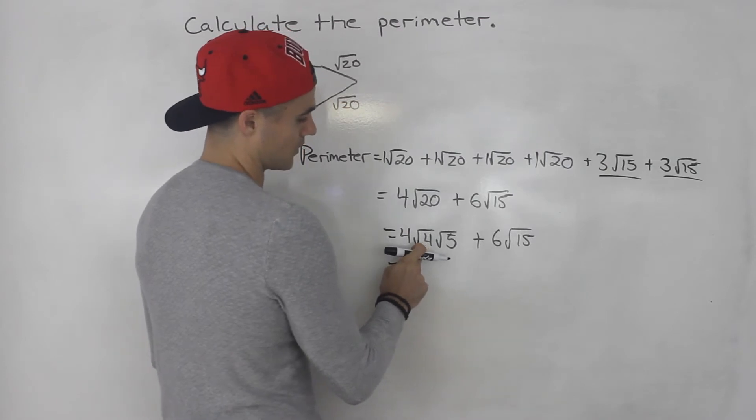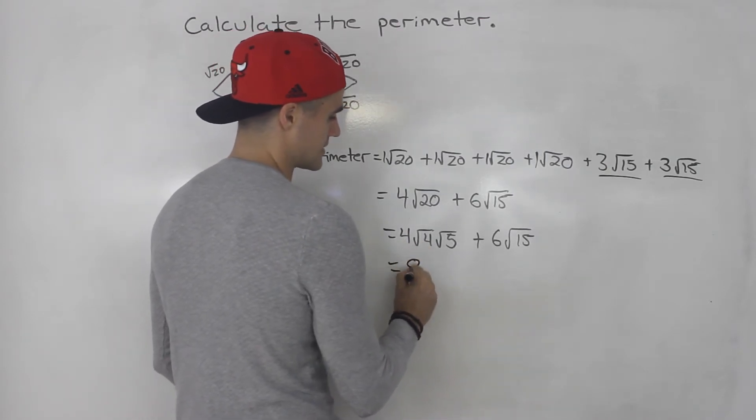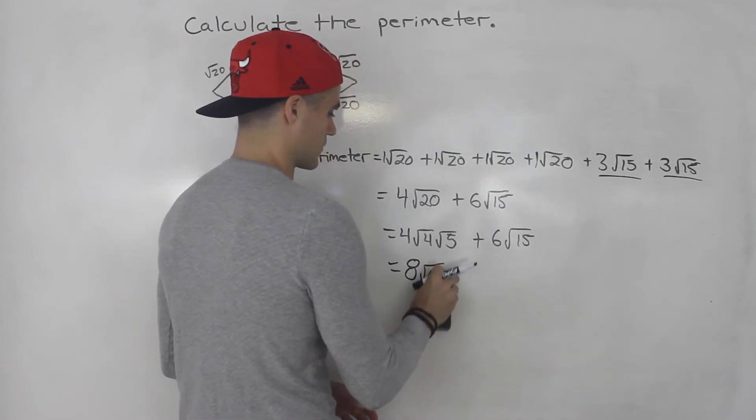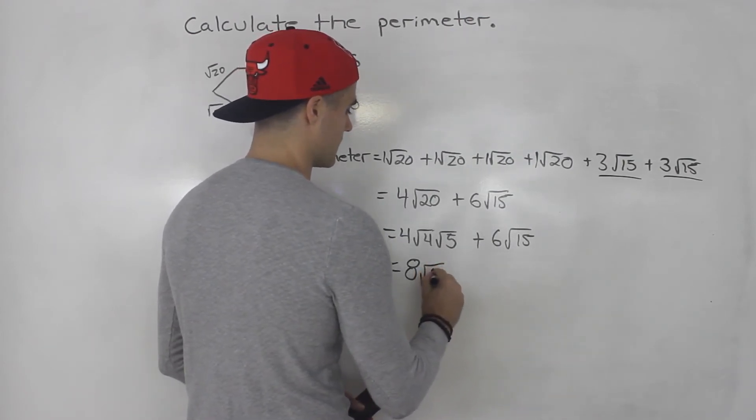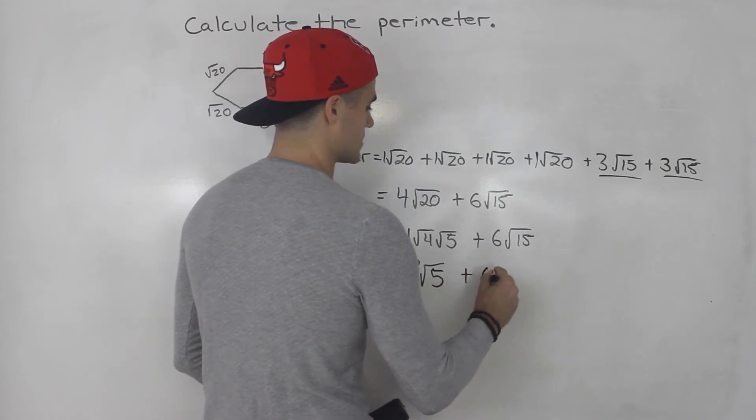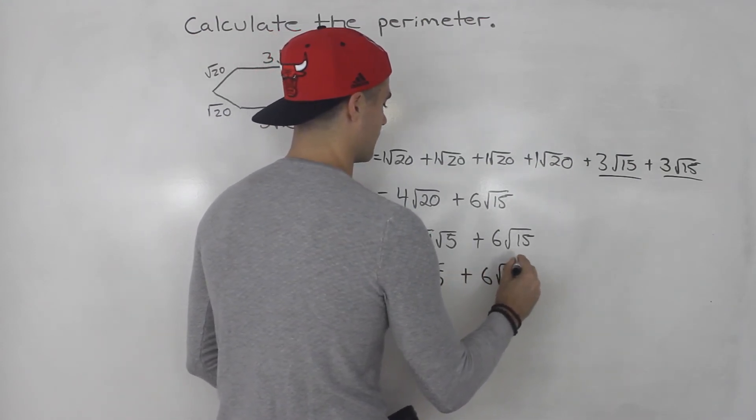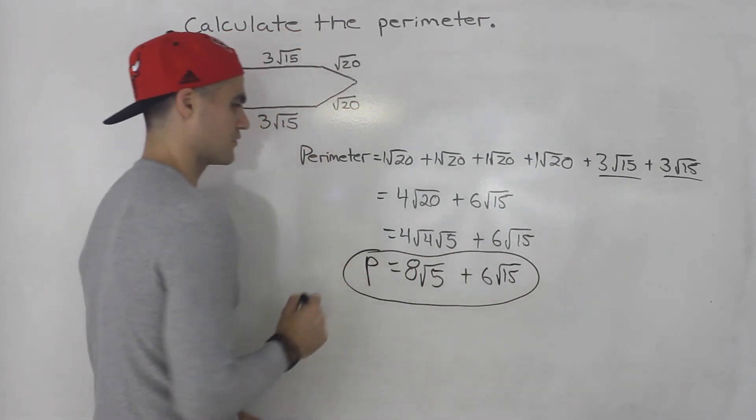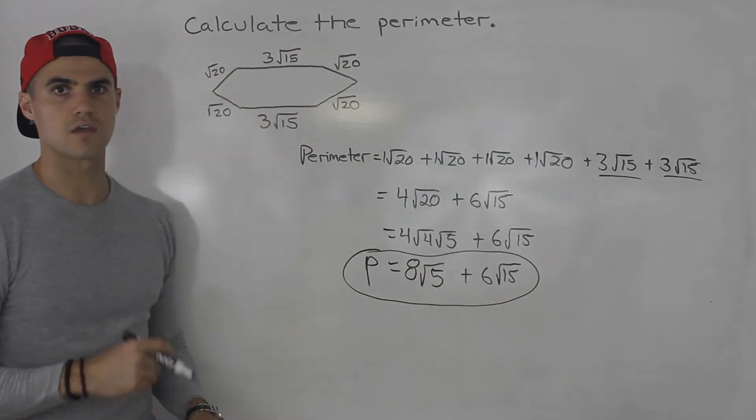Now root four here is two, and then four times two gives us eight. Then we would have root five here. And then this would be six root 15. Right? So that there is your simplified expression for the perimeter.